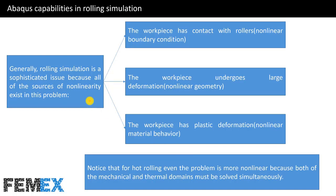Generally, rolling simulation is a sophisticated issue because all sources of nonlinearity exist in this problem. In the rolling process, we have all sources of nonlinearity in the FE simulation. The workpiece has contact with rollers, so we have nonlinear boundary conditions. The workpiece undergoes large deformation, so we have nonlinear geometry. The workpiece has plastic deformation, so nonlinear material behavior is present. We can conclude that rolling simulation is a highly nonlinear simulation and can be very difficult.